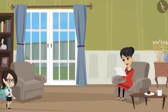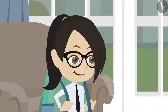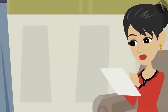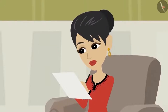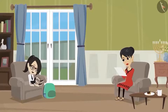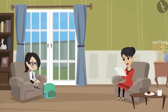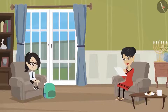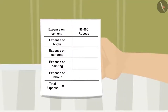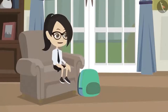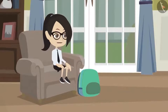Vandana comes home from school. She sees that mom is calculating something on paper. She asks, 'Mother, what are you doing?' Her mother replies, 'Your father and I have decided to build rooms on the top floor of our house, Vandana.'